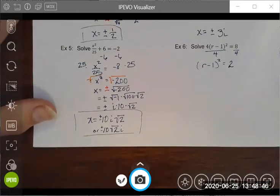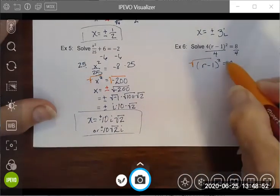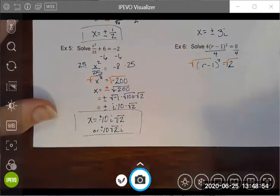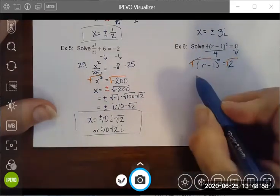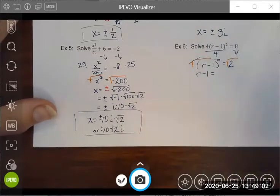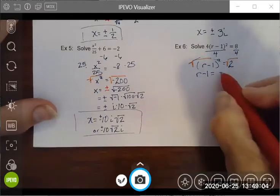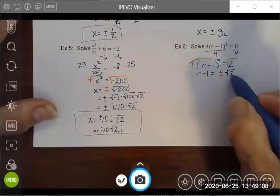I'm going to retain that grouping symbol because everything inside the parentheses is being squared, and I get r minus one quantity squared equals two. Rather than multiply this out, I'm going to go ahead and take the square root of both sides. I'm left with just the contents of my grouping symbol, and that is going to be equal to plus or minus square root two.